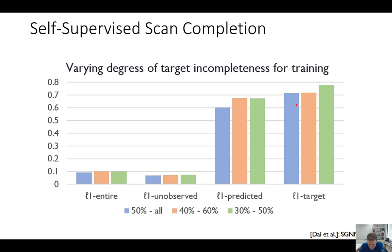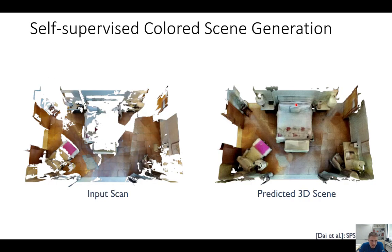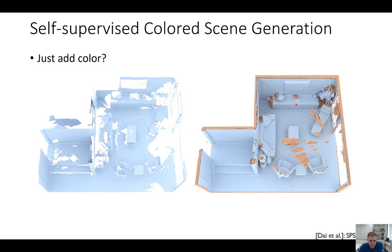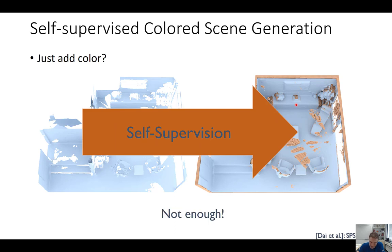The one thing we didn't look at was color predictions. We thought about what we can do for better color prediction and color completion. We wanted to do self-supervised color scene generation in the same way as SGNN — this is a paper we published as SPSG this year. The question is: do we just add color to SGNN? Sounds easy — add another variable for RGB for each voxel with the same self-supervised idea. We tried it, and it didn't work that well. The color signal is actually quite high frequency, and you can't get perfectly non-blurry results.